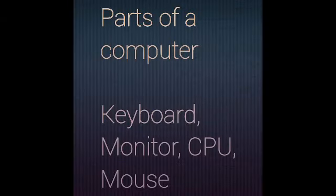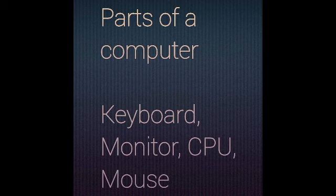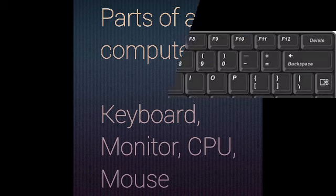The next topic is parts of a computer. A computer has four main parts which help in performing the IPO cycle. These parts are: keyboard, monitor, CPU, and mouse. Let's learn about the parts of a computer in detail.